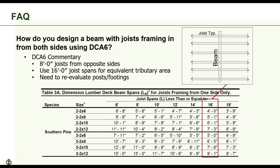How do you design a beam with joists framing in from both sides using the DCA-6? Beams are only permitted to have joists framing in from one side because the tributary area in Table 3A assumes one side loading. The commentary gives guidance: if you have eight-foot joists framing into each side of a beam, doubling the joist span to 16 feet provides the correct tributary area. This and other tips can be found in the commentary.